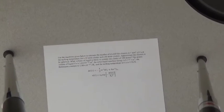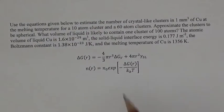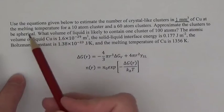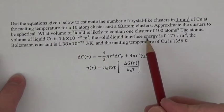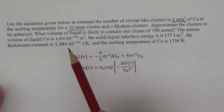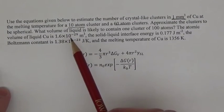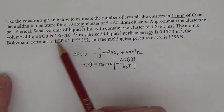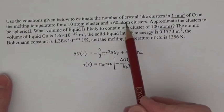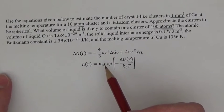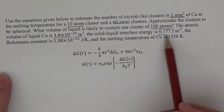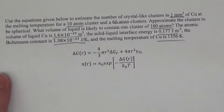First problem says, use the equation below to estimate the number of crystal-like clusters in one cubic millimeter of copper at the melting temperature for a 10 and a 60 atom cluster. So that's kind of the first part. And then the second is approximate the clusters to be, well, to do this, we approximate them to be spherical, which is not exactly right because 10 atoms is small, but it's a reasonable first approximation. What volume of liquid is likely to contain one cluster of 100 atoms, which is just an extension of these. It's the same problem, essentially. You're given the atomic volume of liquid copper and the solid-liquid interface energy and the melting temperature. And then here are the two equations.